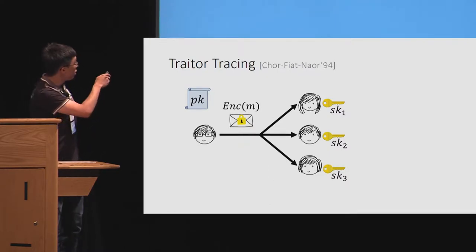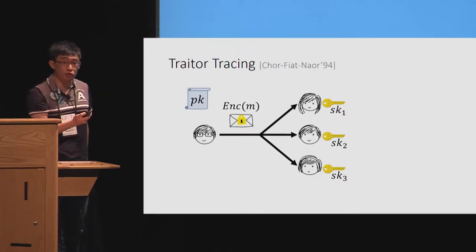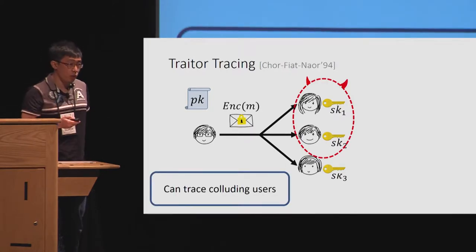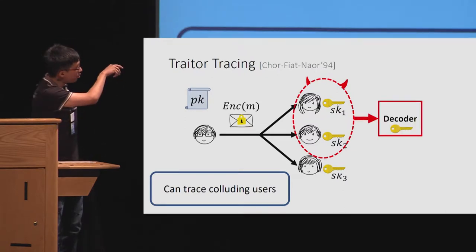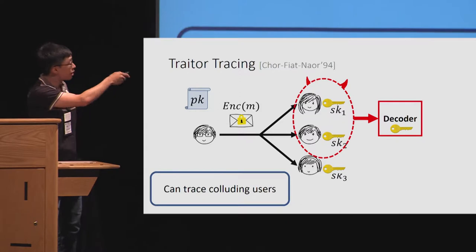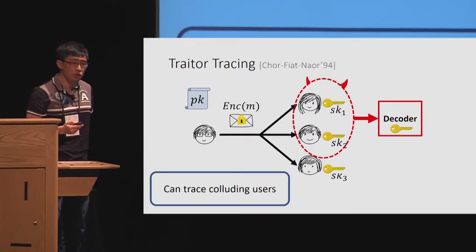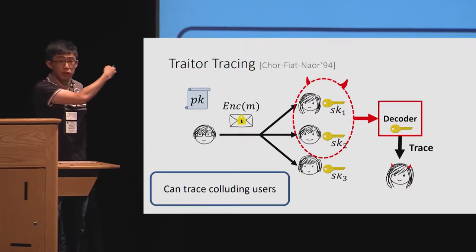In a Traitor Tracing scheme, you have a public key encryption scheme where there are many potential receivers, each with individual keys. The main feature is that there's a way to trace colluding users. Suppose that Alice and Bob produce a decoding box that can decrypt the message or infer any meaningful information about it. Then you want there to be a tracing procedure that identifies at least one traitor that participated in producing the decoding box.